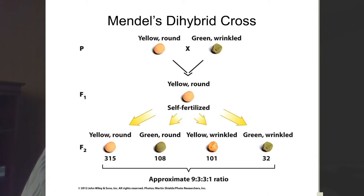When Mendel did this, these were his results: 315 yellow rounds, 108 green rounds, 101 yellow wrinkled, and 32 green wrinkled. To put these data into ratio format, divide each phenotypic category by the numerical value of the smallest category. So 315 divided by 32 is approximately 9, 108 divided by 32 is a little over 3, 101 divided by 32 is again a little over 3, and 32 divided by 32 is of course 1.